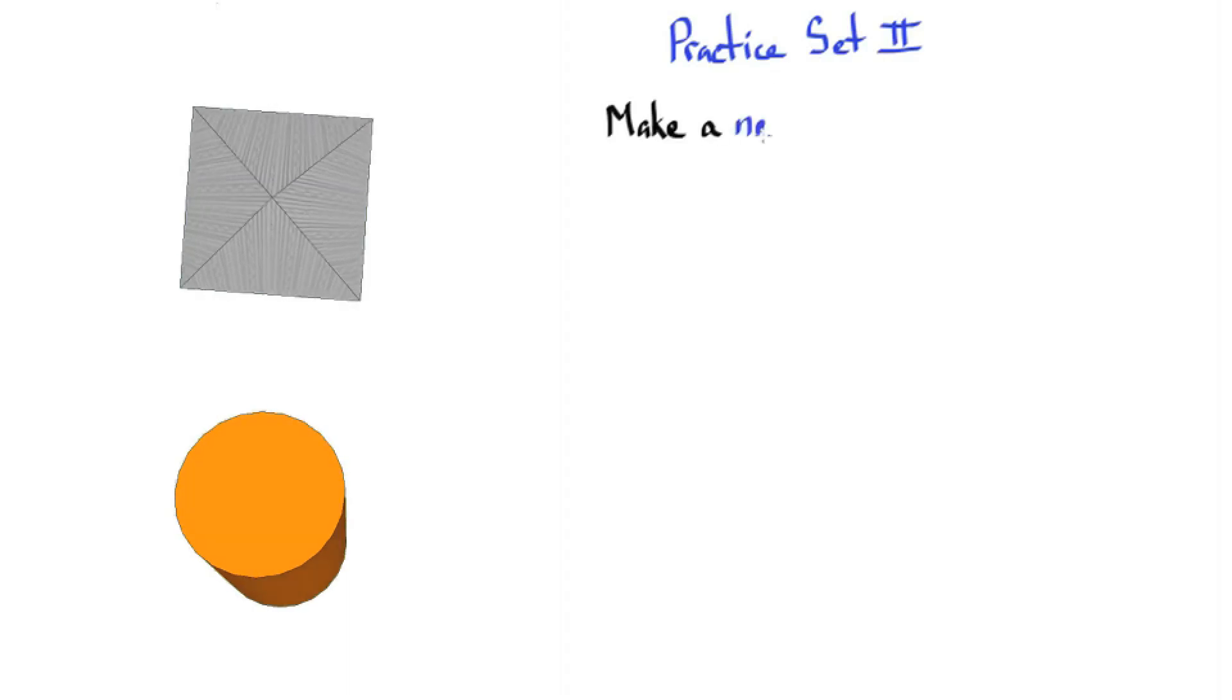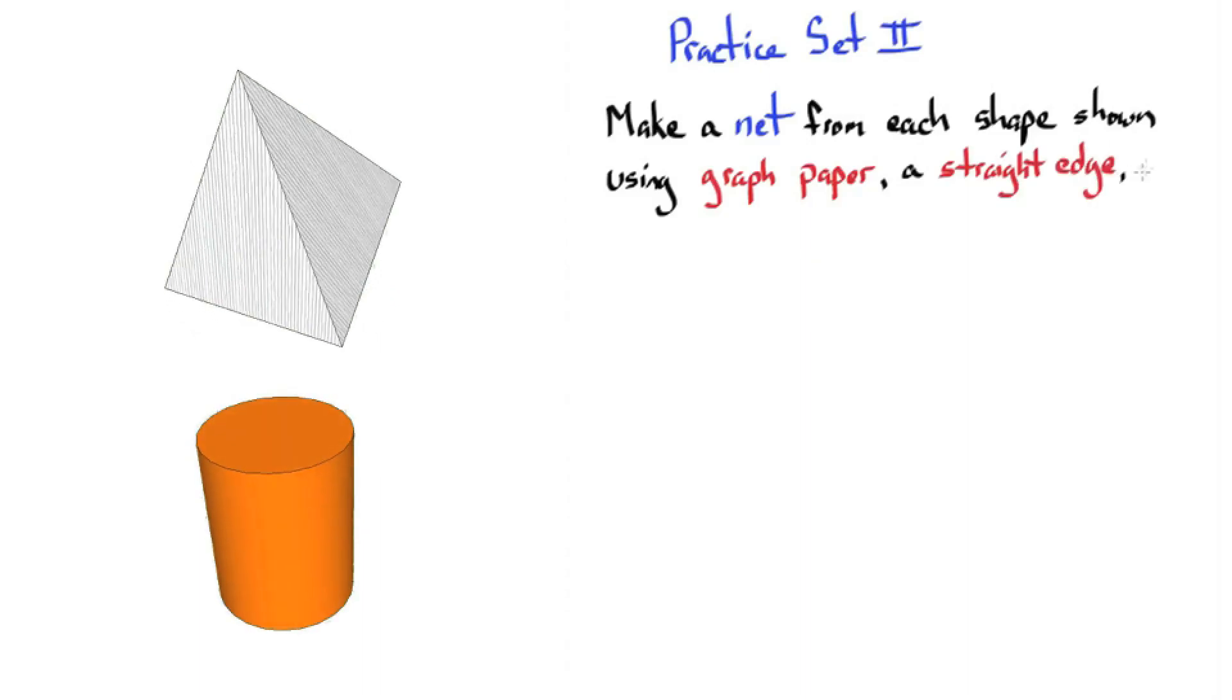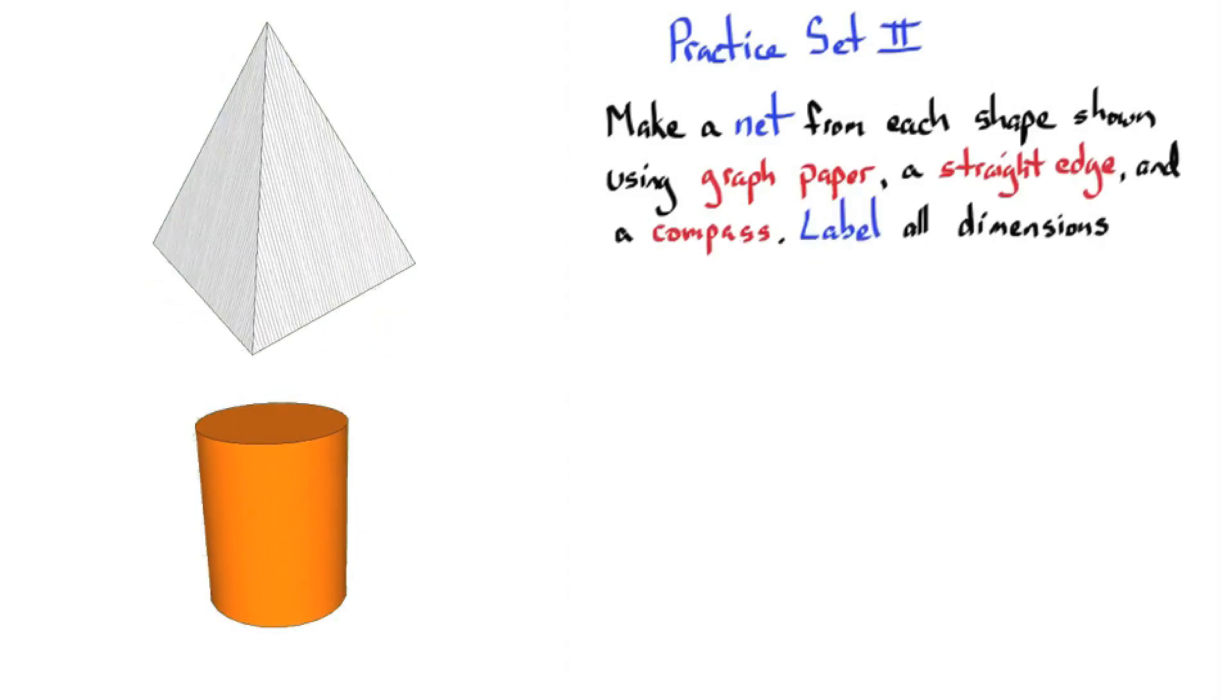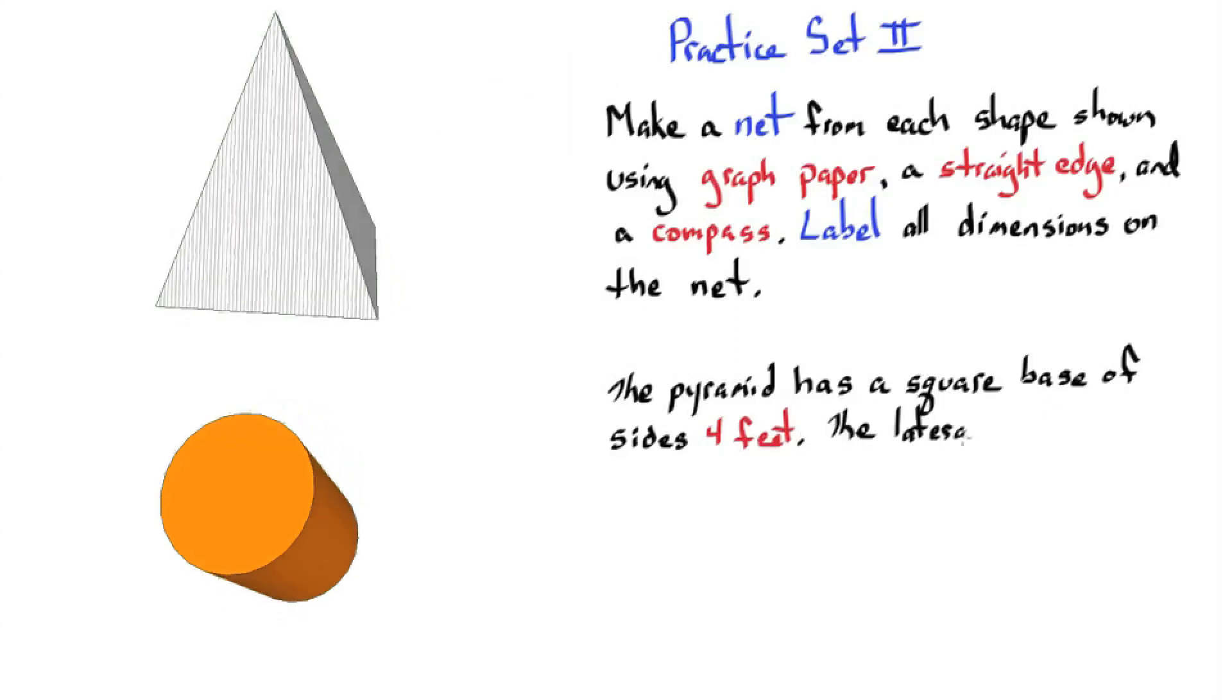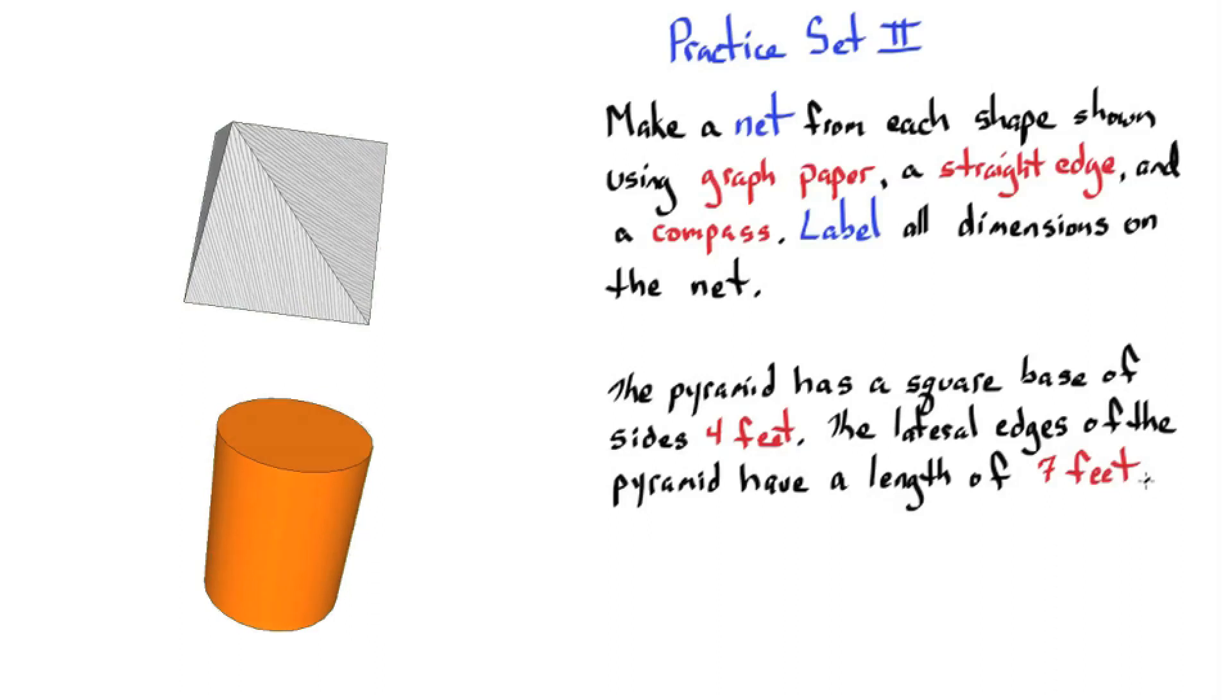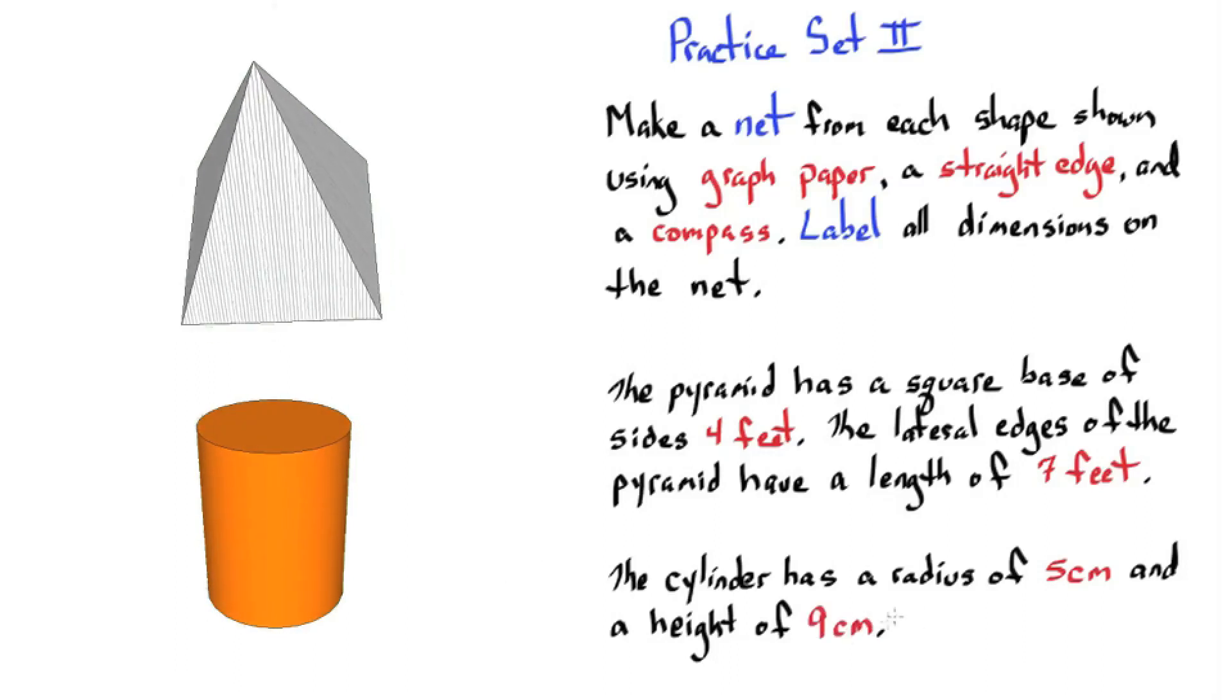Practice set two. Make a net from each shape shown using graph paper, a straight edge, and a compass, if needed. Label all dimensions on the net. The pyramid has a square base of sides four feet. The lateral edges of the pyramid have a length of seven feet. The cylinder has a radius of five centimeters and a height of nine centimeters.